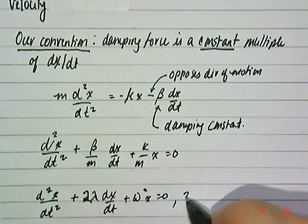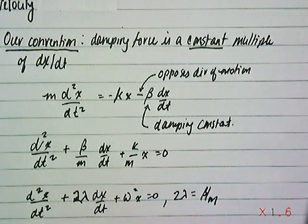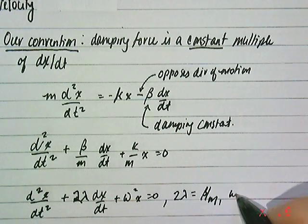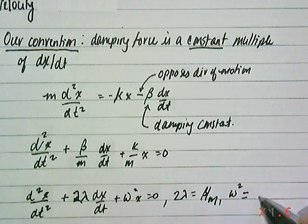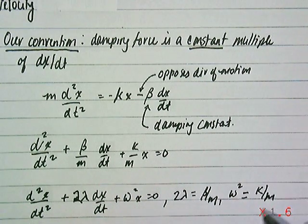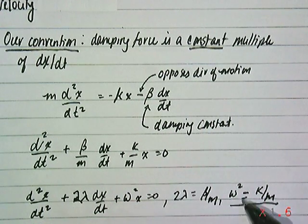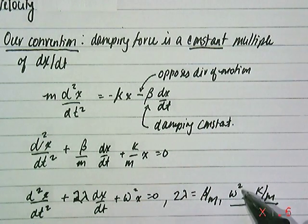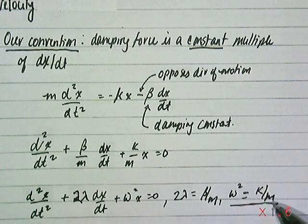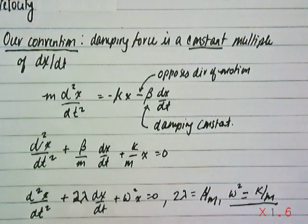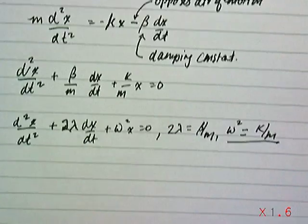The definition is that 2λ is β divided by m, and what we saw before, we'll represent ω² as k over m. We're writing k over m as a perfect square, so it would be ω² is k over m.